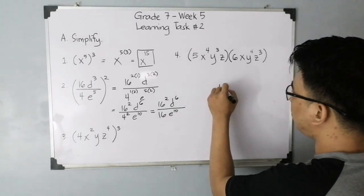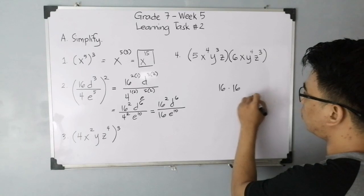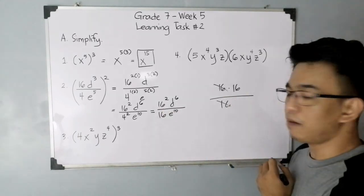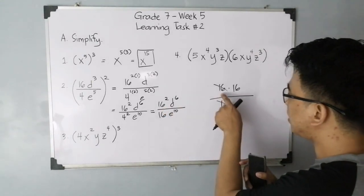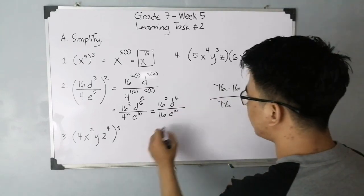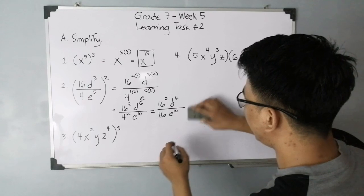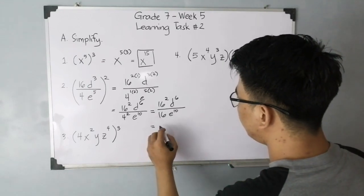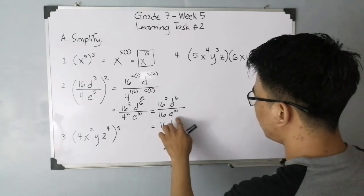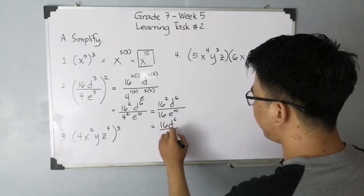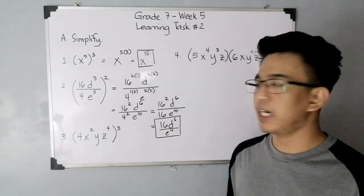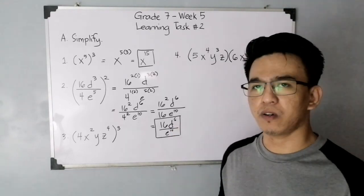This is our separate solution. The 16 squared can be factored out as 16 times 16 over 16. You can cancel the 16 directly. When we expand the 16 squared, that is 16 times 16 over 16. When you simplify, your answer here is simply 16 d raised to 6 over e raised to 10. This is the actual answer for item number 2 in applying power of power or simply power rule.